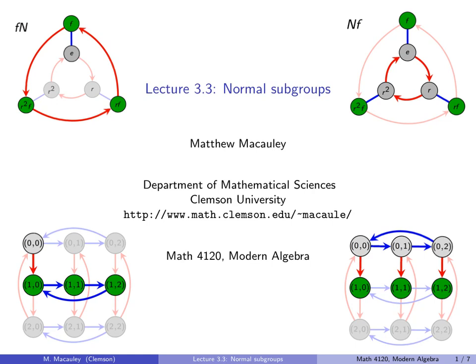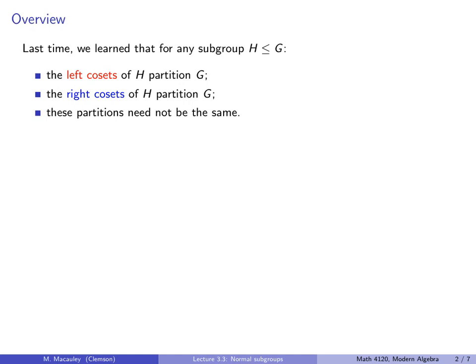Welcome to lecture 3.3, Normal Subgroups. Last time we learned that for any subgroup H, the left cosets of H partition G, the right cosets also partition, and these two partitions need not be the same.